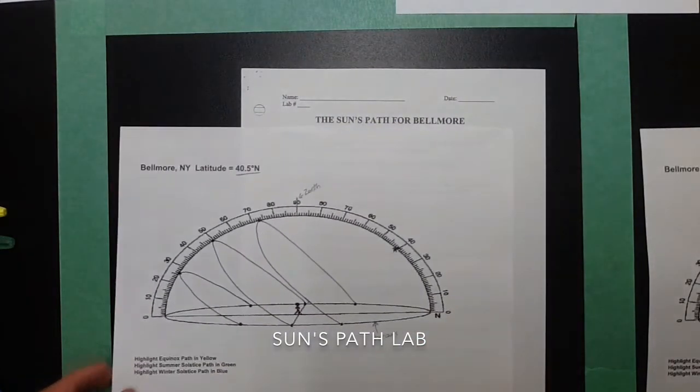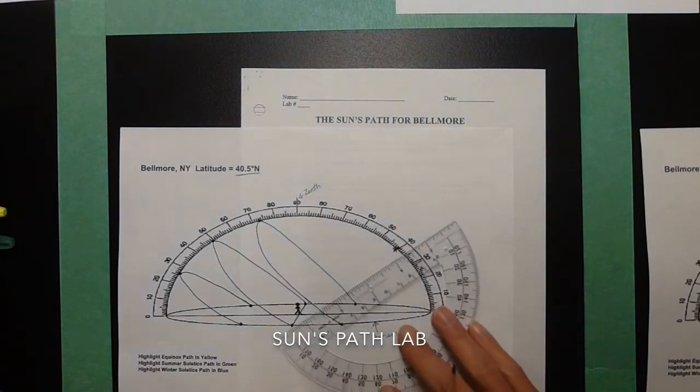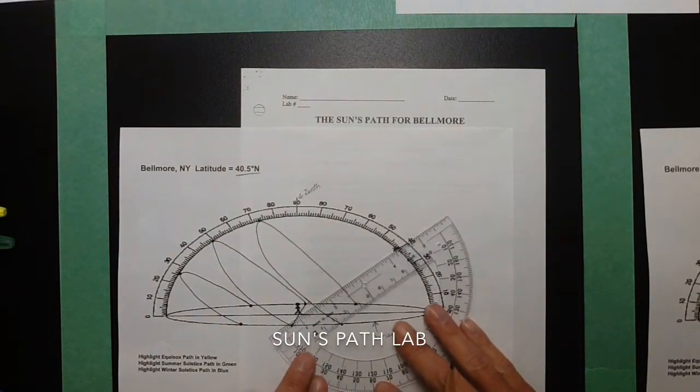Now, we know that Polaris is going to be located above the northern horizon because Polaris is the north star. And when you look at Polaris, since Bellmore is at 40.5 degrees north, Polaris should be at 40.5 degrees north.